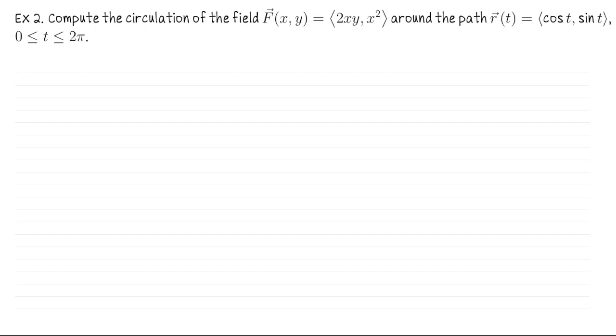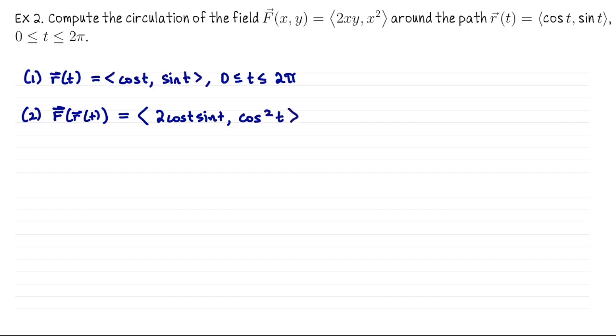Now let's compute the circulation of F(x, y) equals ⟨2xy, x²⟩ around the same path. First step is the same as before, we have the same path. Now we evaluate our vector field along the path. We'll get ⟨2cos(t)sin(t), cos²(t)⟩. For our third step, we have the same velocity vector as before, so now we're ready to compute this circulation integral.